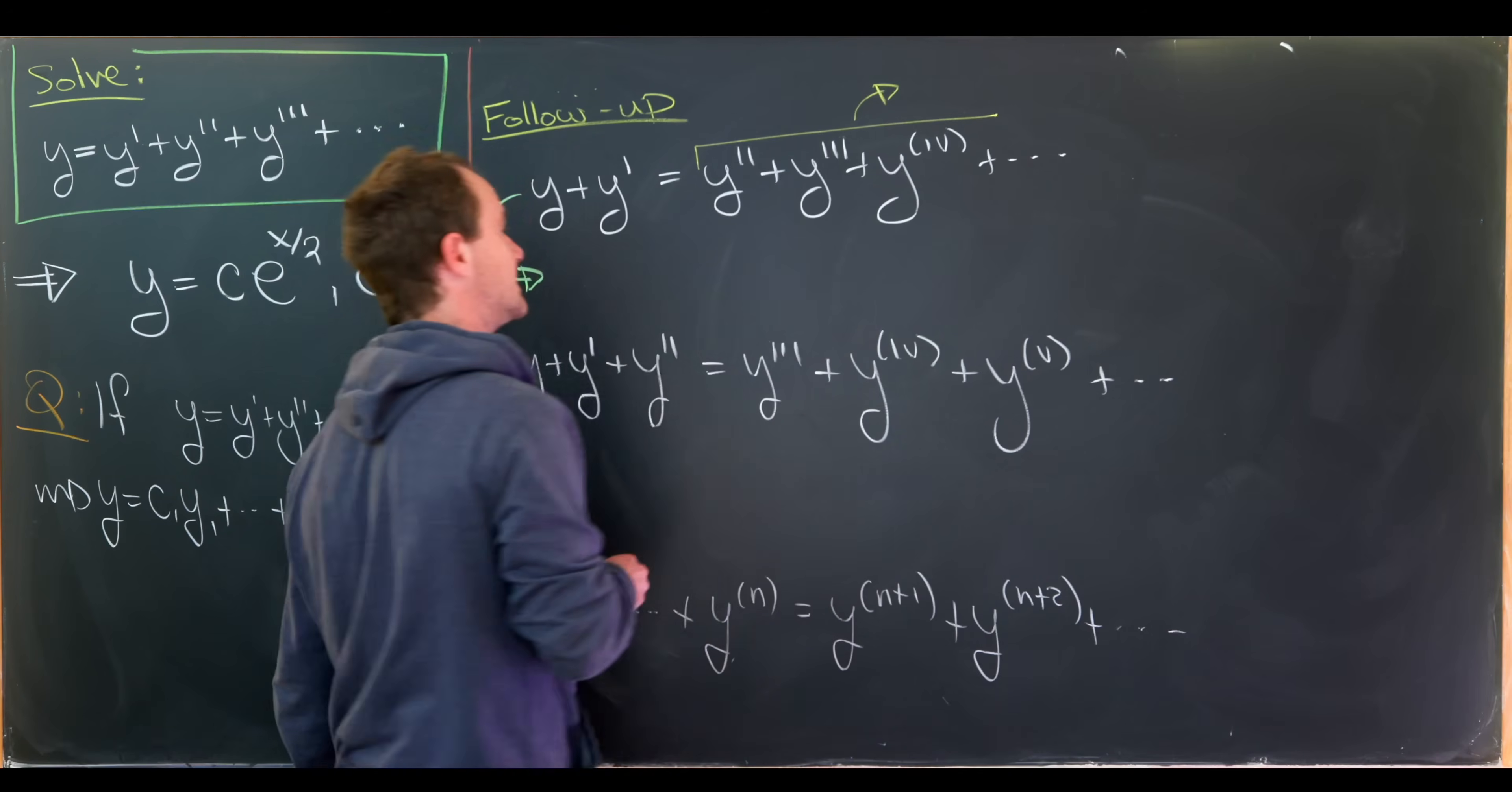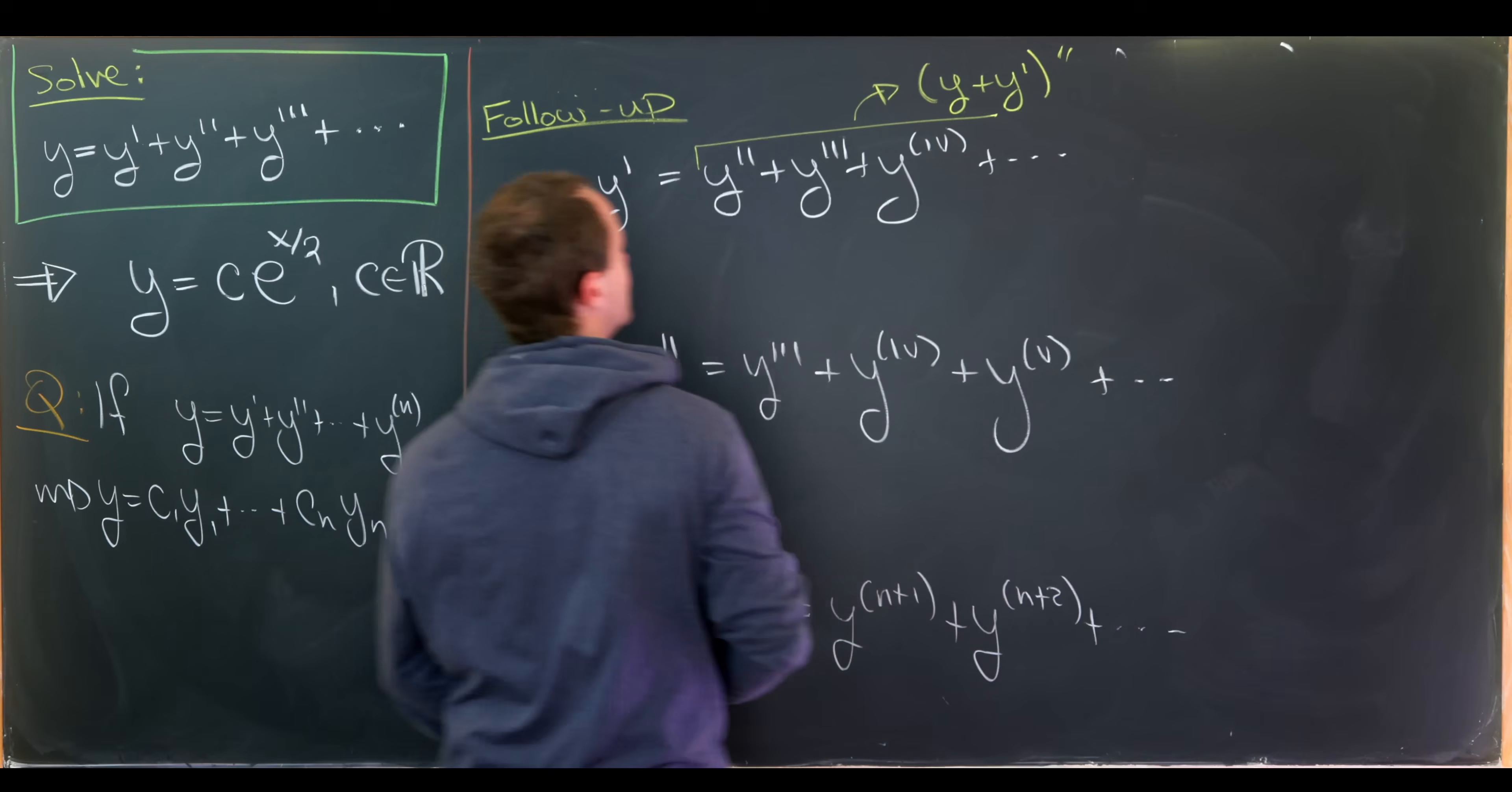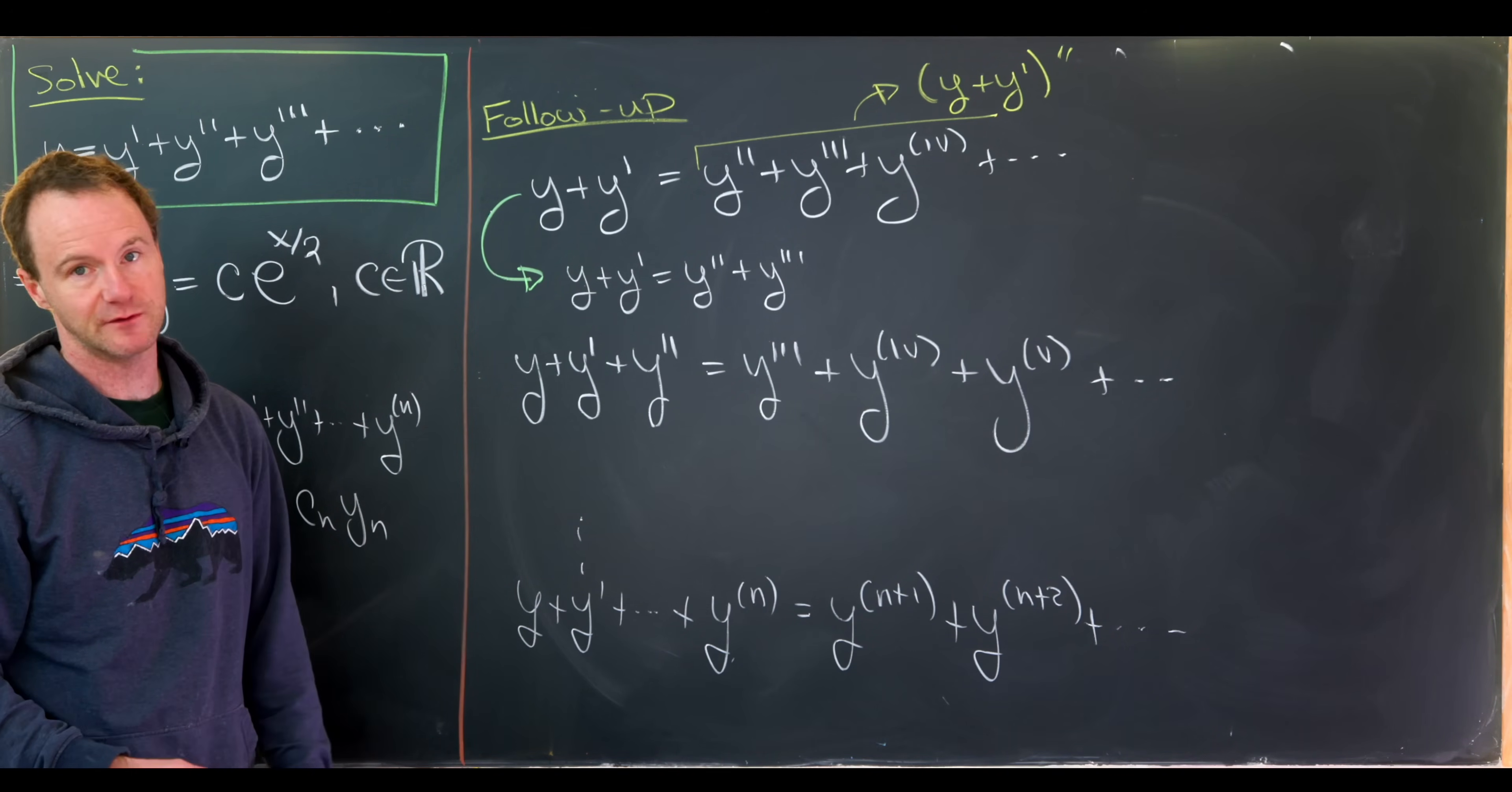I think probably this first one can be solved fairly quickly just by noticing that this right hand side is exactly the second derivative of the left hand side using something fairly similar to our first strategy. So this is the second derivative of the left hand side. The left hand side is y plus y prime. So that would give us something like y plus y prime equals y double prime plus y triple prime. And I think you could probably solve that without too much difficulty. But I think it probably gets pretty tricky as we move forward.